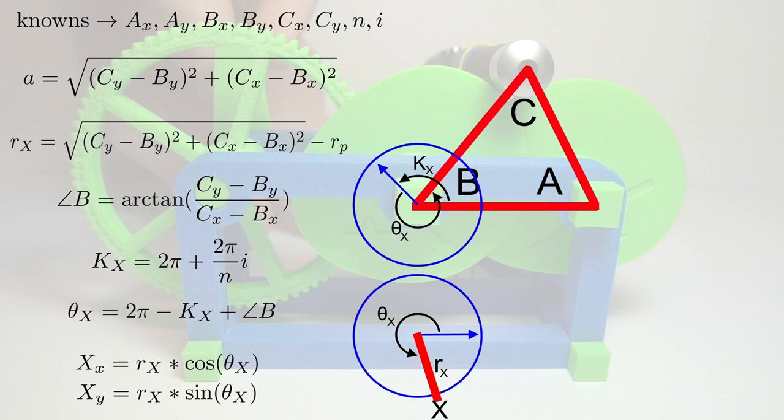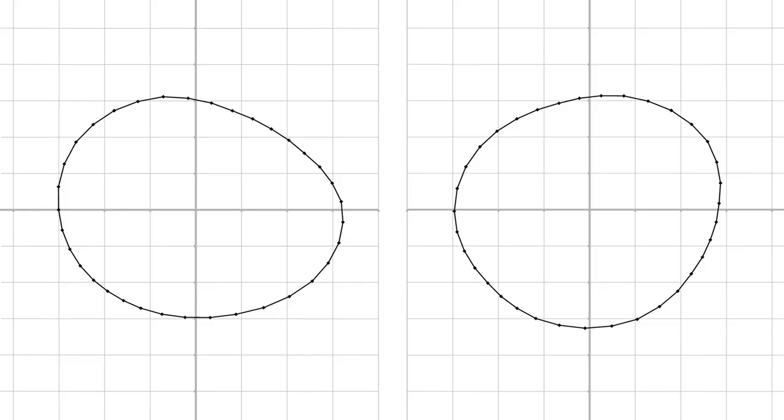So we take the input pattern, we take that math, and we apply it to every point on the input pattern, and we get the two complete x and y cams.